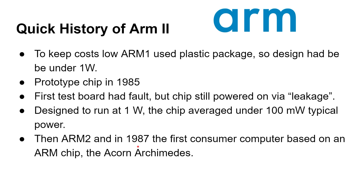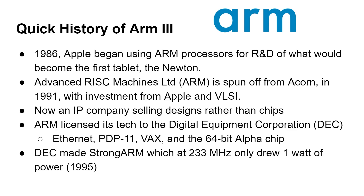The ARM2 came out in 1987, and the first consumer computer with an ARM chip was the Acorn Archimedes. In 1986, Apple began using ARM processors for the R&D of what would eventually become the Newton — of course, that was a commercial failure. However, ARM and Apple worked together, and ultimately Advanced RISC Machines Limited — ARM — was spun off from Acorn in 1991 with investment from Apple and VLSI. At that point it transformed itself into an intellectual property company, selling designs rather than actual chips.